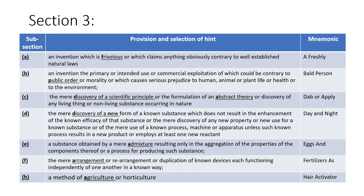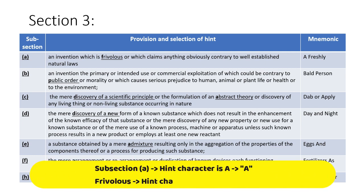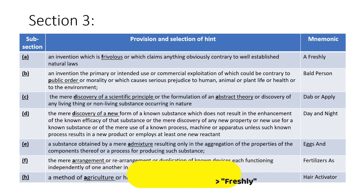For subsection A, I have used the hint word 'frivolous.' You will have to remember that an invention which is frivolous or which is contrary to established natural laws would not be considered as patentable. From 'frivolous,' you will also have to remember the other element in the subsection, which is 'contrary to natural law.' Selecting A from the subsection alphabet and F from 'frivolous' as the hint word, I make the phrase 'afreshly.'